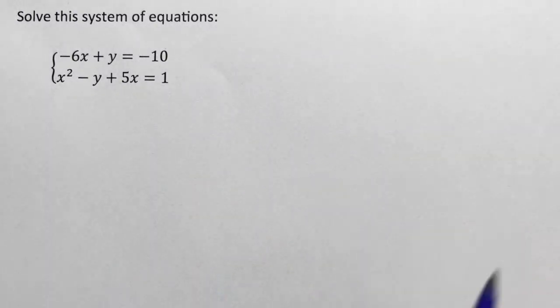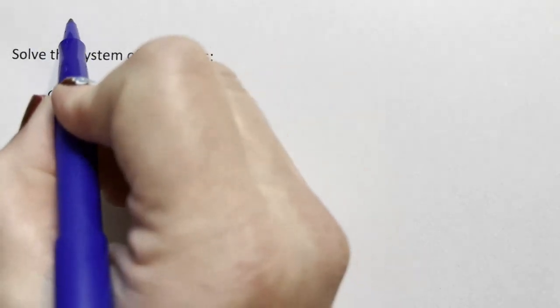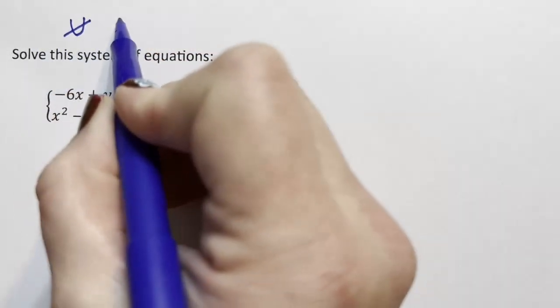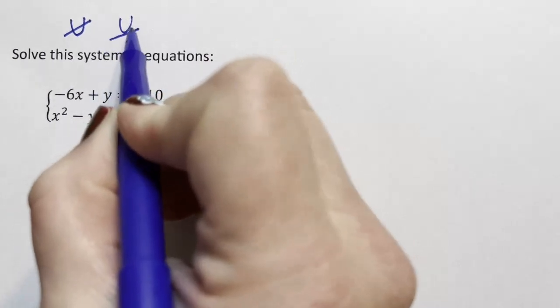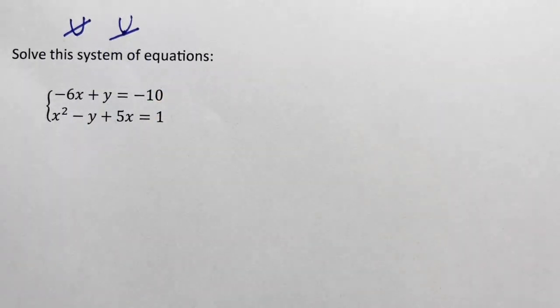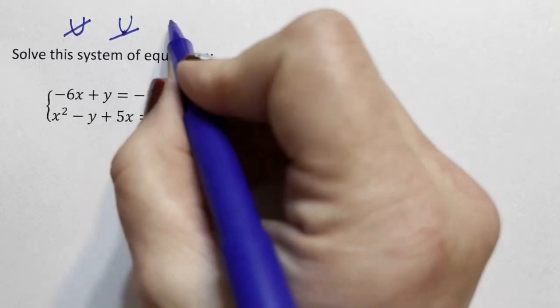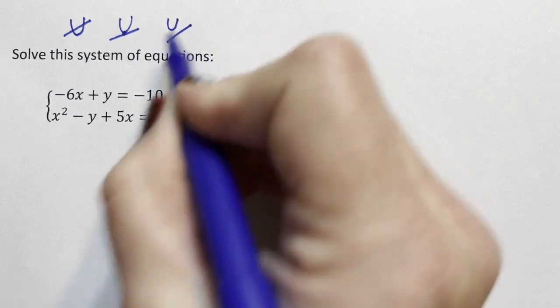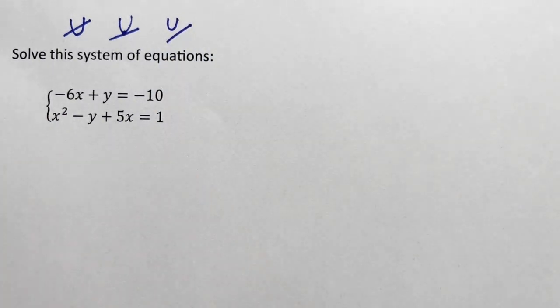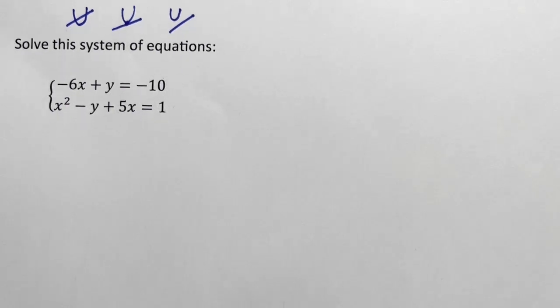And so for something like this, we could have two solutions, one if it hits right at that vertex or if it's tangent, it doesn't have to be the vertex as long as it's tangent. Or we could have a situation where they don't intersect at all. So we have to figure out what case we have, which situation, and what the solution is.